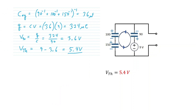For the Thevenin volts, leaving the output open we see one series charge loop with three capacitors in series: 90, 100, and 150 microfarads. Taking the inverse of the sum of inverses gives 36 microfarads. In series, charge is the same: Q = CV, so 36 microfarads times 9 volts gives 324 microcoulombs. The volts on the 90 microfarads is that charge 324 divided by 90 microfarads, giving 3.6 volts. The Thevenin volts, looking at the output points from the bottom, is 9 volts minus that 3.6 volts — giving 5.4 volts.